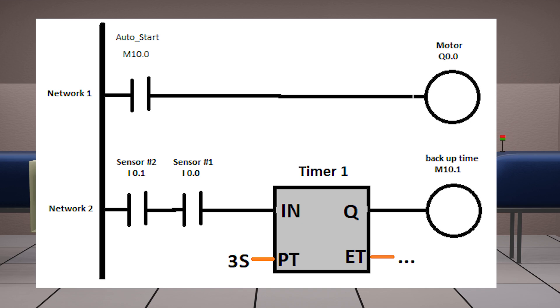So whenever this auto start bit is on, this will start the conveyor motor Q 0.0.